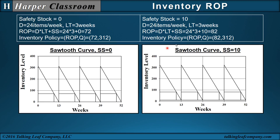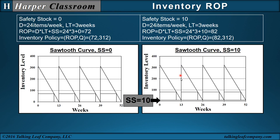We'll carry a safety stock of 10 all year long to guard against stock out. When we have a safety stock of 10, the sawtooth curve essentially just increases by 10. So the maximum inventory goes from 312 to 322, and the ROP goes from 72 to 82. The inventory policy is 82, 312. The lot size is still 312 and the inventory period is still 13 weeks.